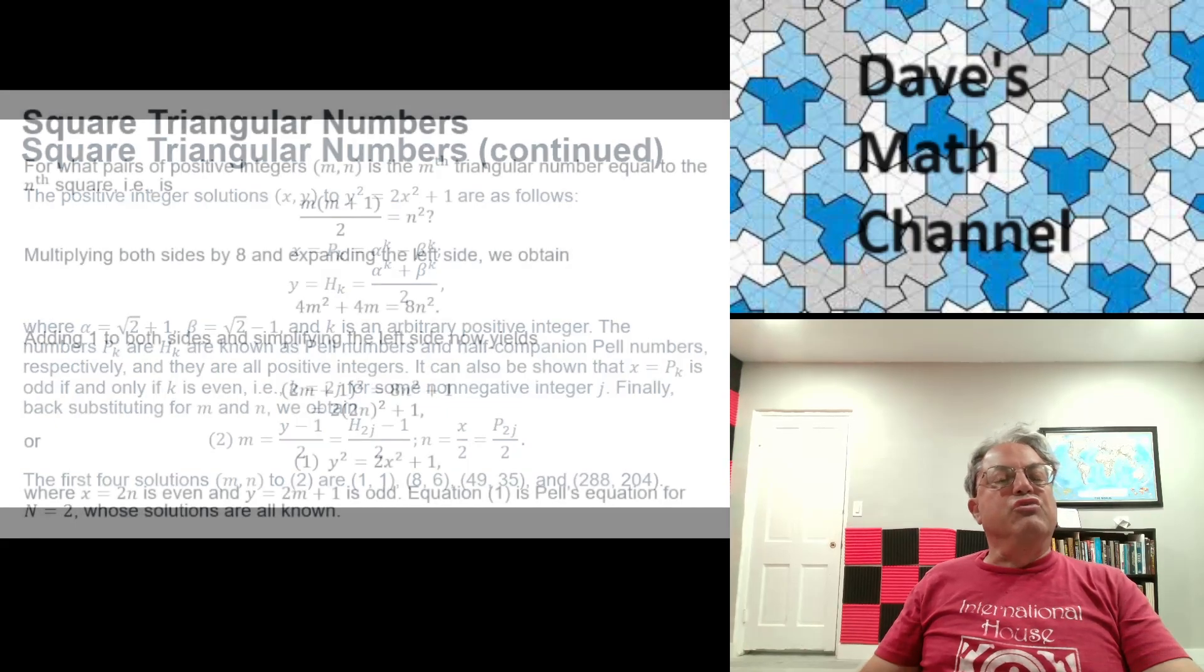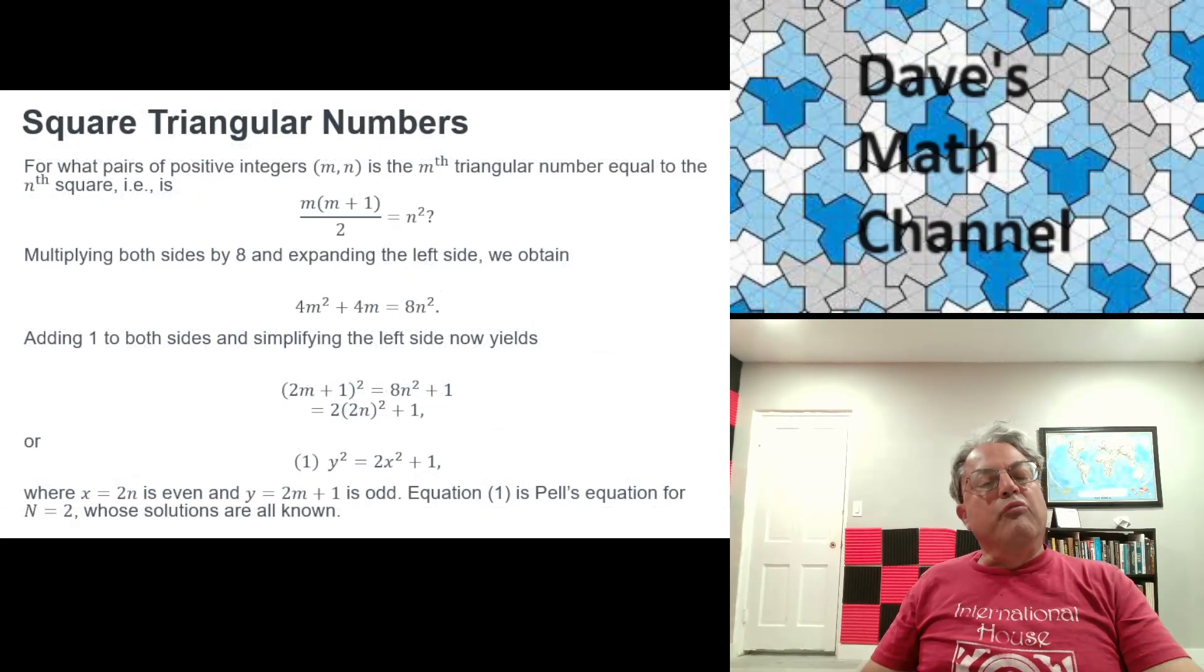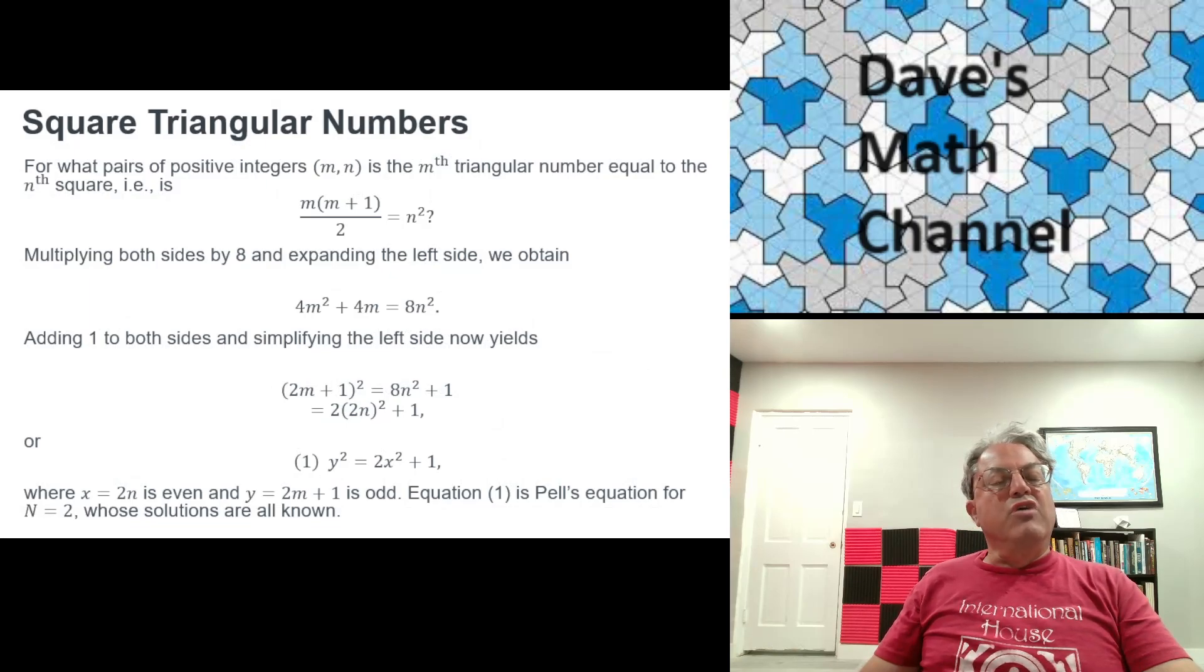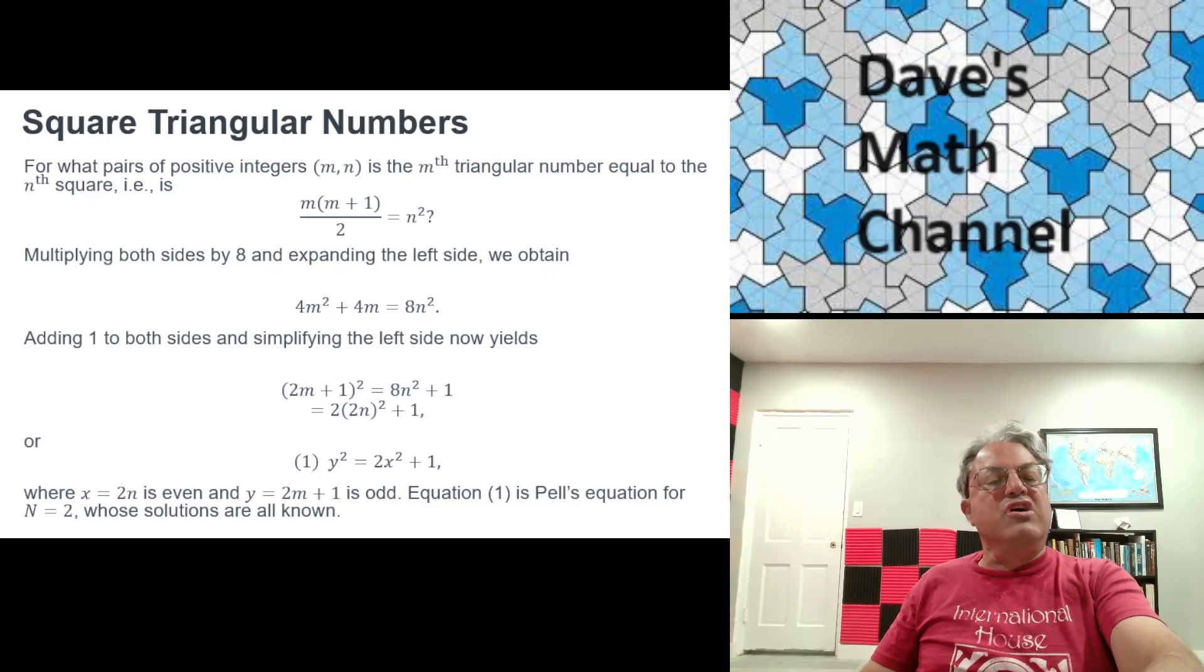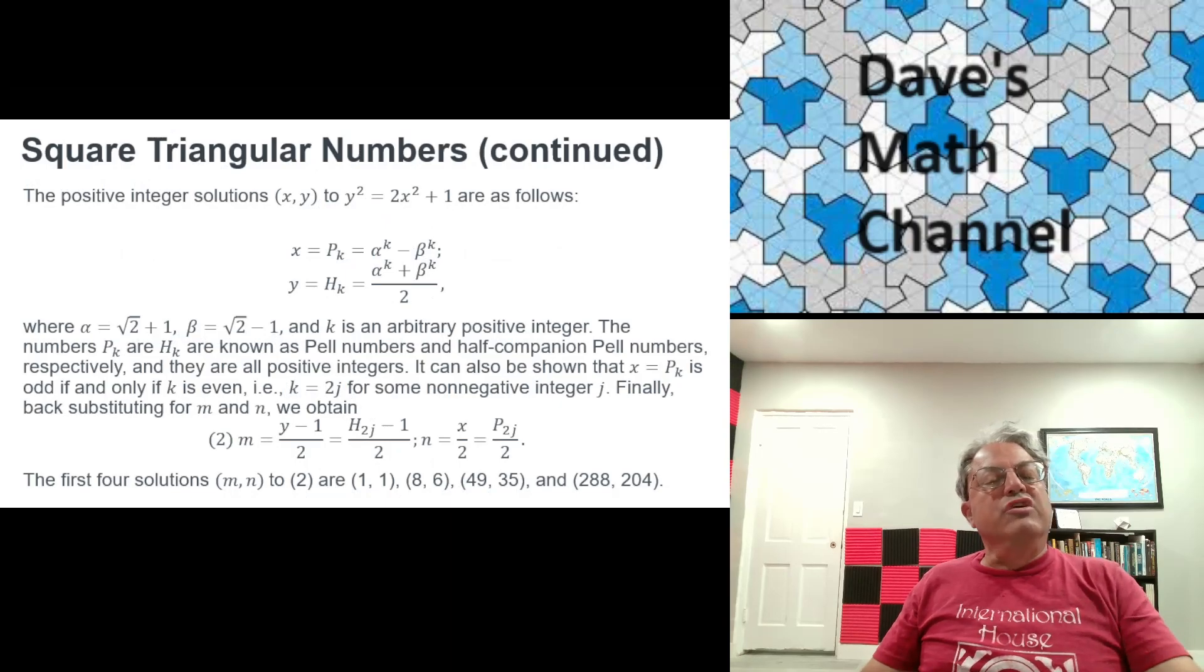Remember, x was 2n and y was 2m plus 1. So when we backtrack, we get m equals x over 2.